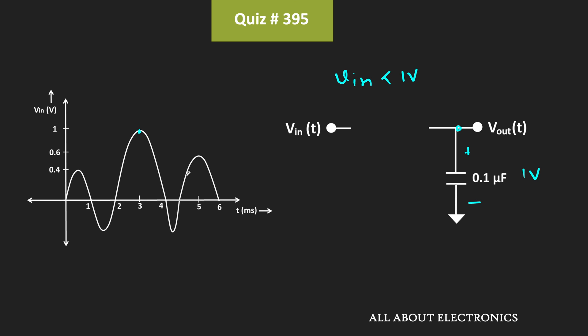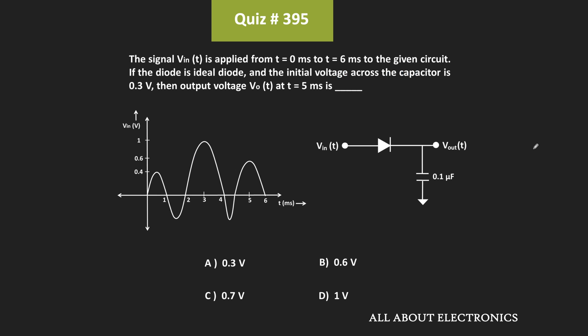That means even during the next peak also, since the input voltage is less than 1V, this diode will act as an open circuit. And if we see the voltage at 5ms, then the voltage across the capacitor, or the output voltage, will be equal to 1V. So in short, since this circuit is the ideal peak detector, it will hold the peak voltage of the signal. And therefore for the given equation, D is the correct answer.